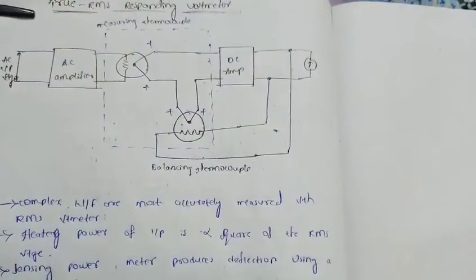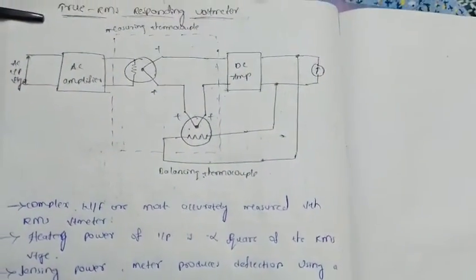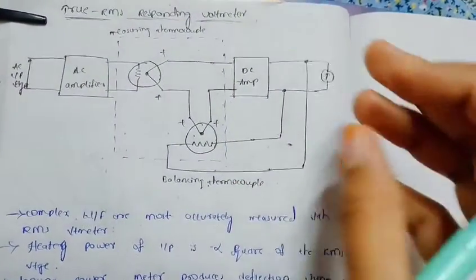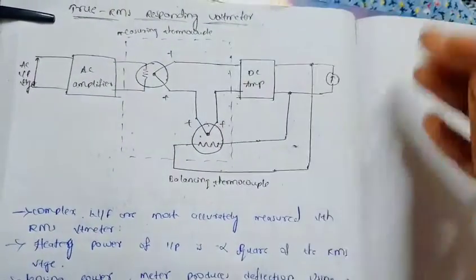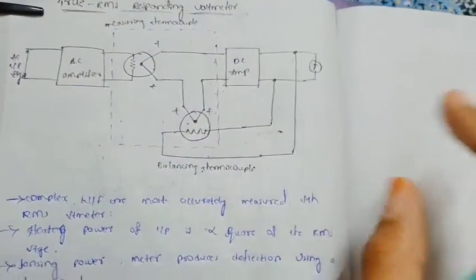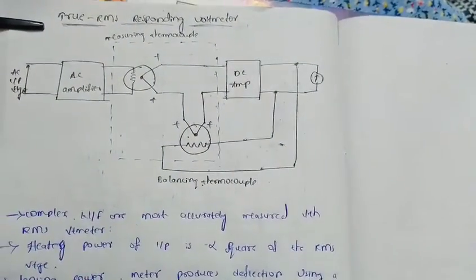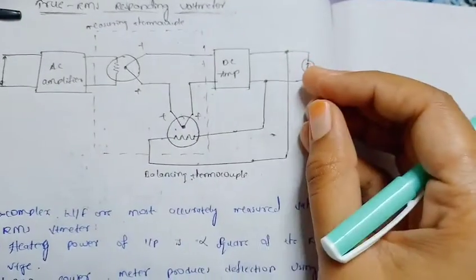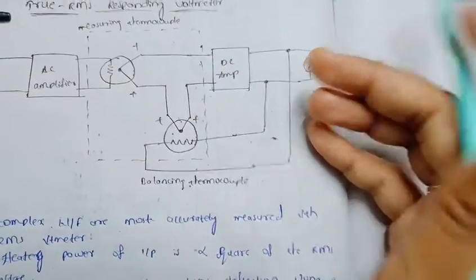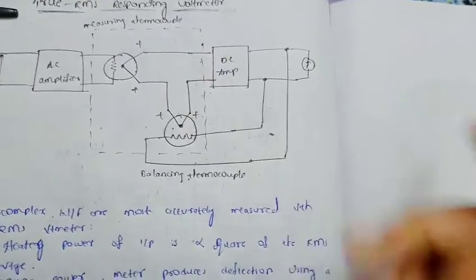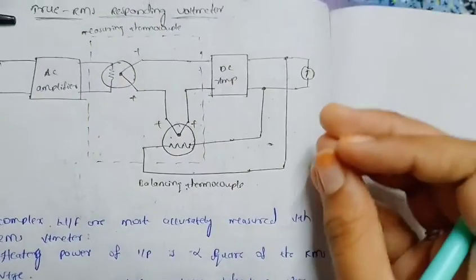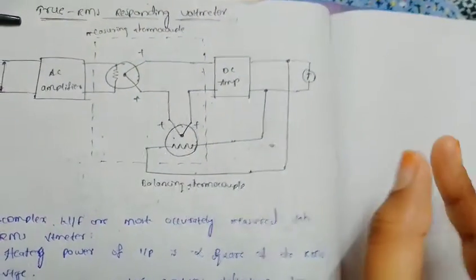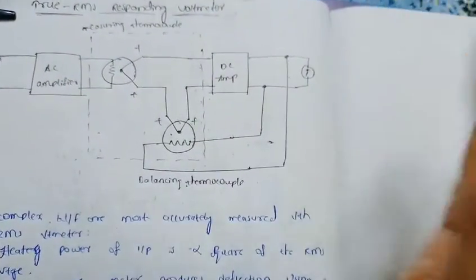We can measure accurate waveforms. Here we have heating power, which is proportional to the square of the RMS value — the RMS voltage. So first, we can measure the power.